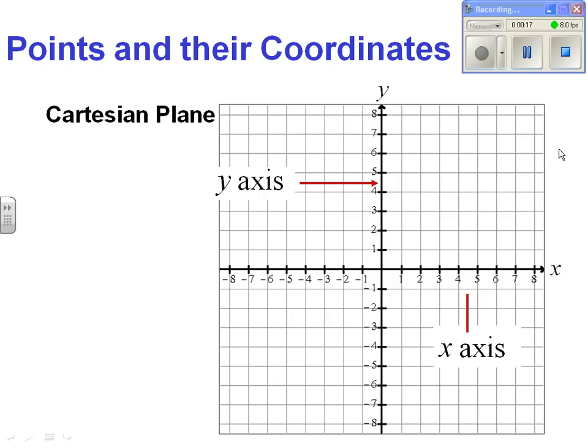As you can see, a Cartesian plane consists of two axes. The horizontal one is the x-axis and the vertical one is known as the y-axis. The point at which they intersect is known as the origin.